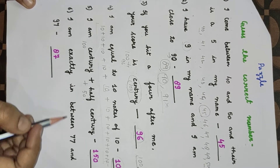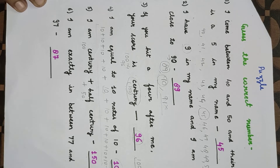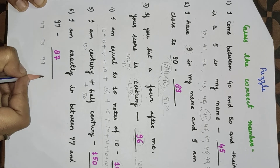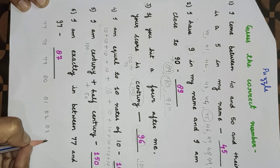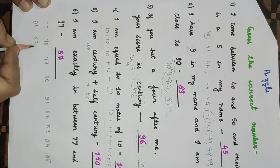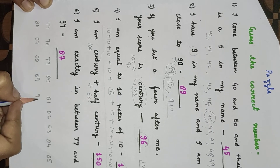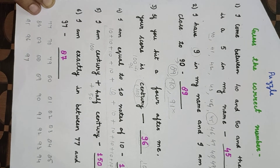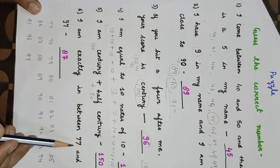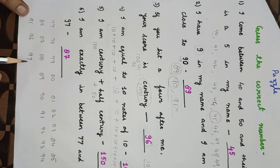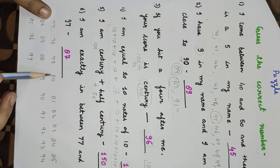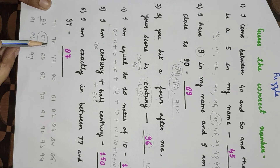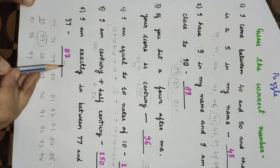I am exactly in between 77 and 97. Let's count: 78, 79, 80, 81, 82, 83, 84, 85, 86, 87, 88, 89, 90, 91, 92, 93, 94, 95, 96. There are 10 digits on each side. What comes exactly in between is 87. So 87 will be the right answer.